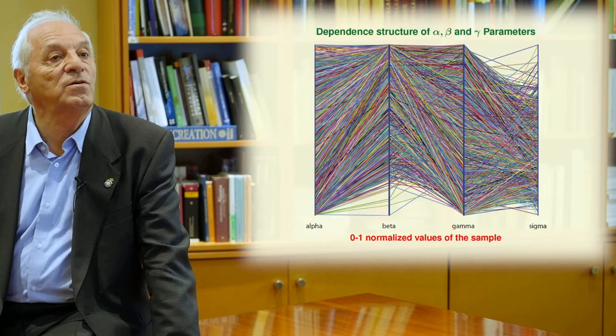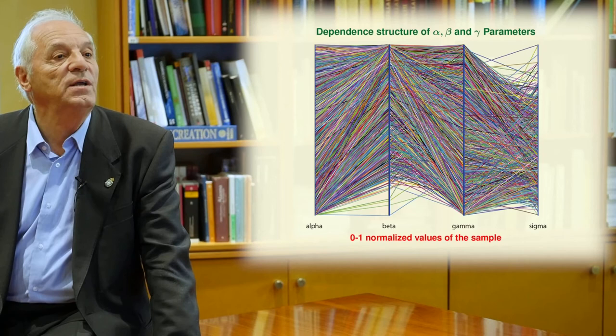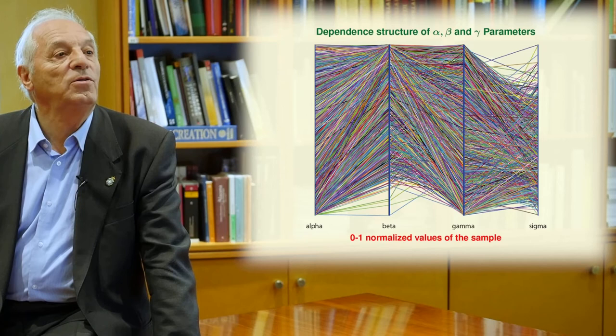Another way of having an idea of the dependence of the different parameters is the plot that you have in this transparency. First, we normalize the parameters between 0 and 1. And then, we plot the different samples as polygonals.